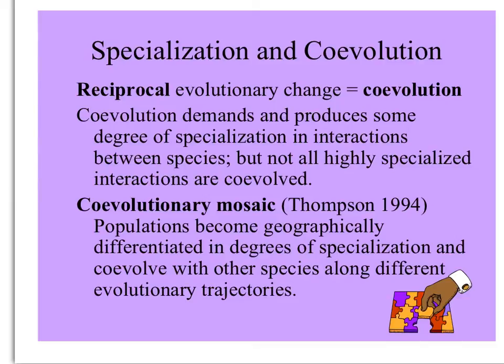Co-evolution can be defined as reciprocal evolutionary change. It demands and produces some degree of specialization in the interactions between species, but not all highly specialized interactions are co-evolved. John Thompson is a scientist who has done a lot of work in the theory and gathering real data about co-evolution. He suggested the term the co-evolutionary mosaic to describe the way that populations interact with different species throughout their range and become differentiated in degrees of specialization, evolving along different trajectories in different places.